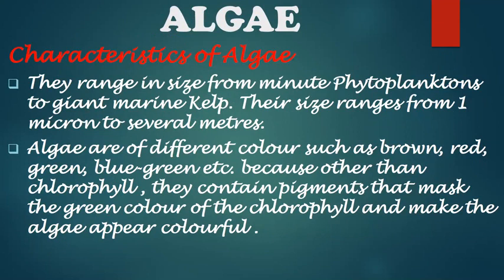The algae range in size from minute phytoplankton to giant marine kelp. Their size ranges from 1 micron to several meters. Algae are of different colors such as brown, red, green, blue-green etc. Because other than chlorophyll, they contain pigments that mask the green color of the chlorophyll and make the algae appear colorful.